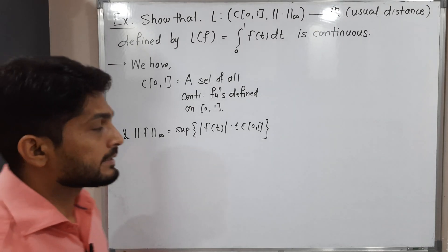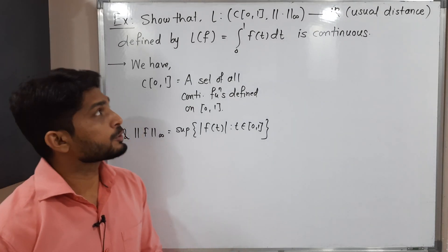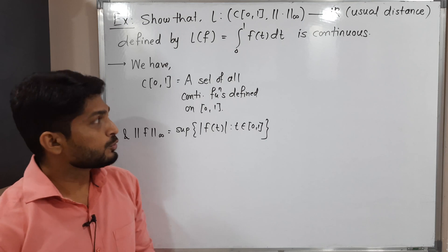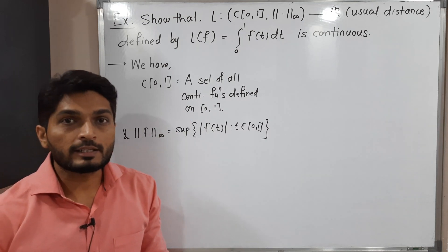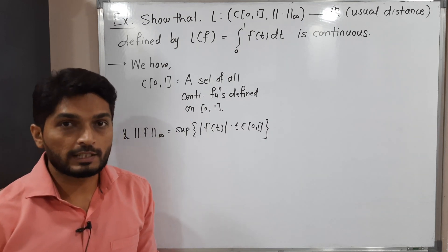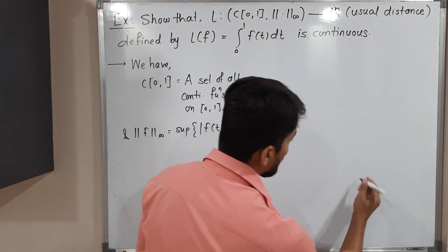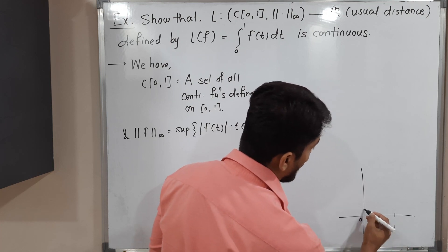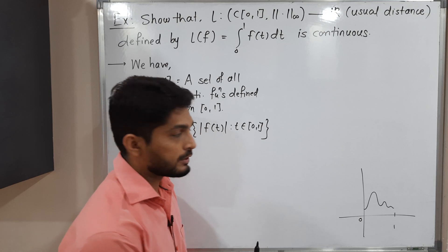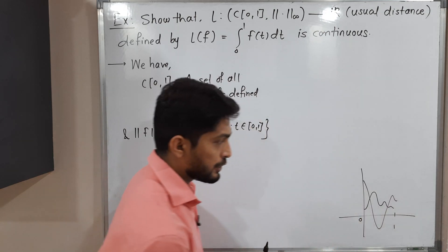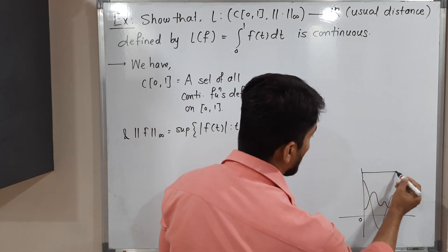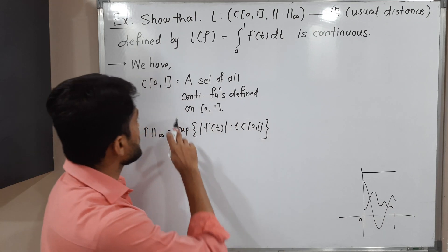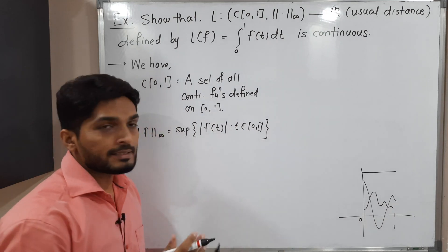Hi everyone. In this video we are going to discuss this example. Here we have a function L which is defined on C[0,1] with norm infinity. C[0,1] is the set of all continuous functions defined on the closed interval [0,1]. In a diagram, this is the y-axis, this is the x-axis, and we have the closed interval [0,1]. A continuous function defined on [0,1], or even a constant function, is continuous on this closed interval. So C[0,1] is the set of such functions.